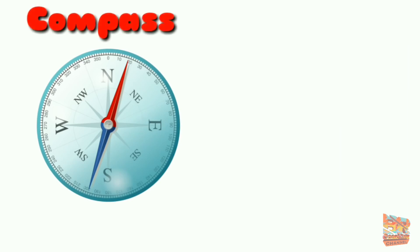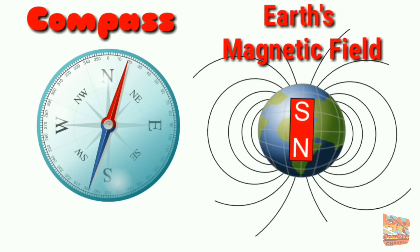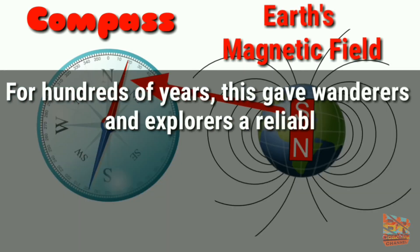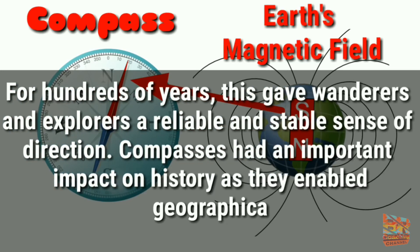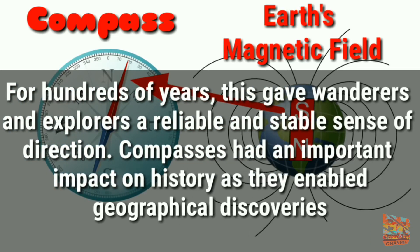A compass needle aligns itself with the earth's magnetic field, so it always points north for hundreds of years. This gave wanderers and explorers a reliable and stable sense of direction. Compasses had an important impact on history as they enabled geographical discoveries.